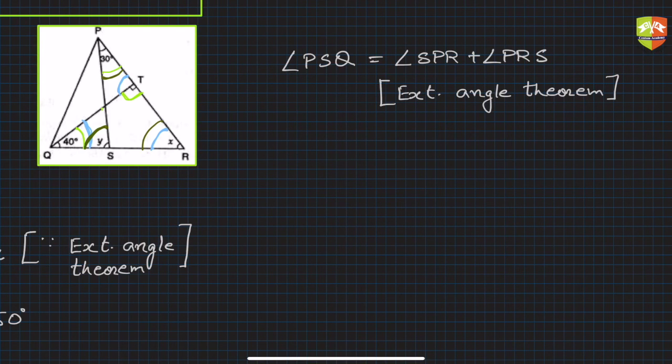So PSQ, that is y, will be equal to 30 degrees plus x. Because SPR was 30 degrees, you can see from the figure, and x we just found out which was 50 degrees. So it becomes 30 plus 50 degrees, hence y is 80 degrees.